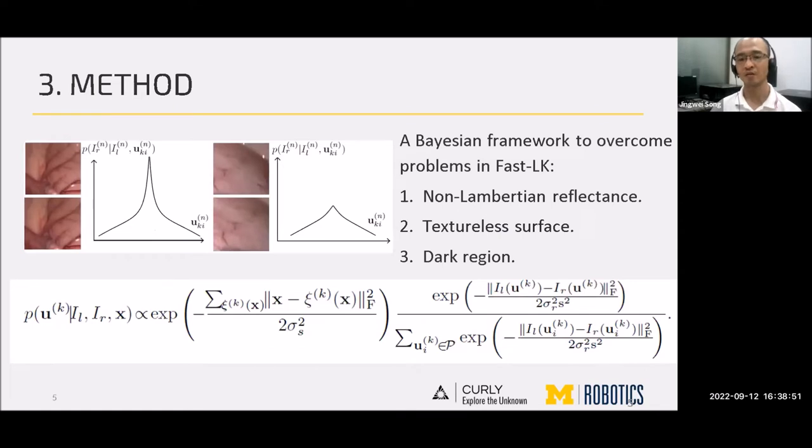However, DIS or FastLK cannot be directly applied in surgical scenarios for three reasons. First, textureless surface and dark illumination in MIS lower the contrast and increase the blurriness of the obtained stereo images. Thus, FastLK has a higher risk of wrong prediction or falling into a local minimum.